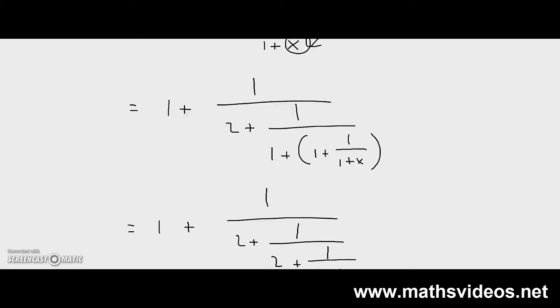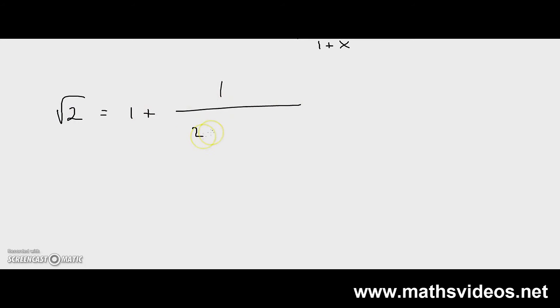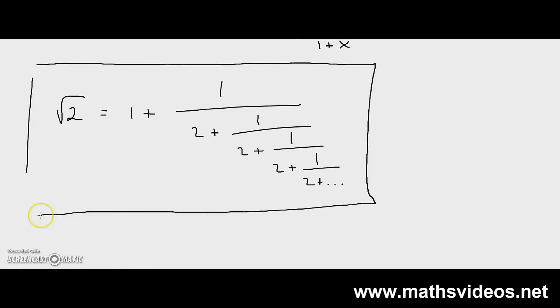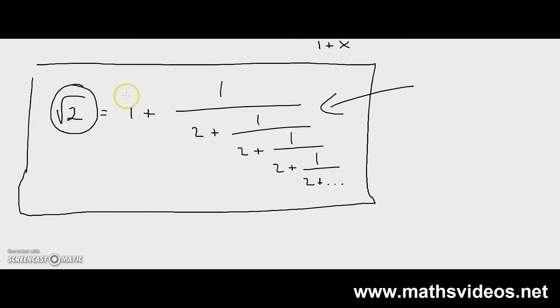If I continue doing what I've just been doing, I'm going to get the square root of 2 is equal to 1 plus 1 over 2 plus 1 over 2 plus 1 over 2 to infinitum. And it turns out that this is in fact the value of the square root of 2. Now, using this fraction over here, or this value, can we get a fraction which is approximately equal to the square root of 2?